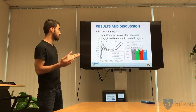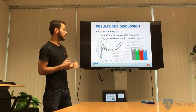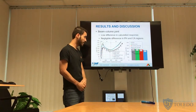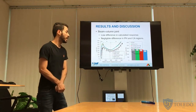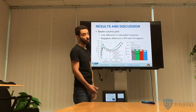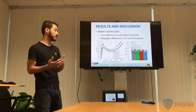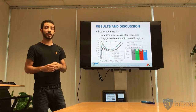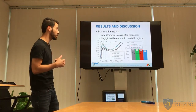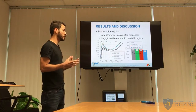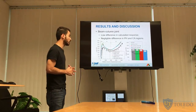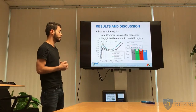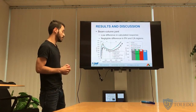The beam-column joint presents the most critical effects in the first region — the compressive arch action. Even there, the difference between models measured by the peak load is not very expressive: the maximum difference is about 13 percent. So while beam-column joints have an impact in the compressive arch region, the different models do not produce significantly different results from each other. We could not conclude which of the studied beam-column joint models is best, because the calculated differences were not considerable.